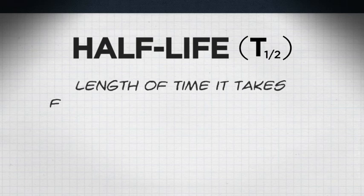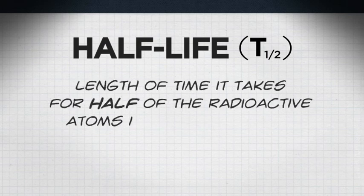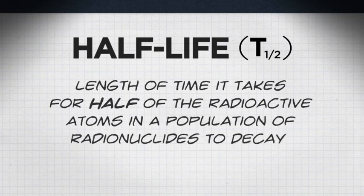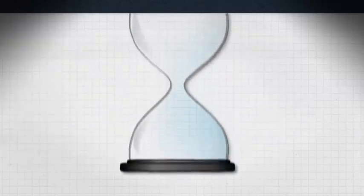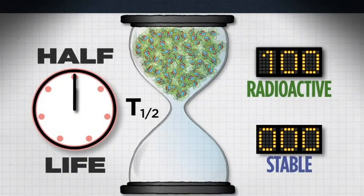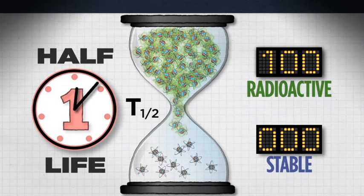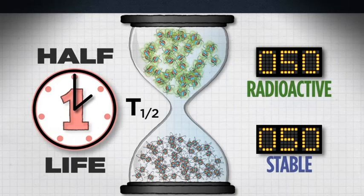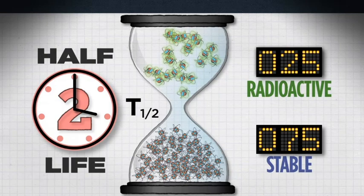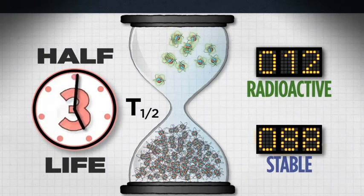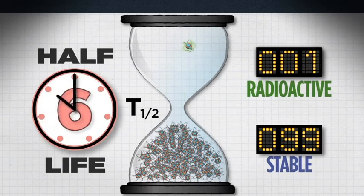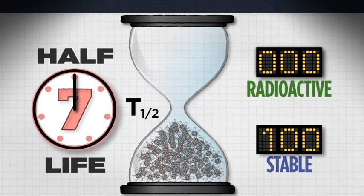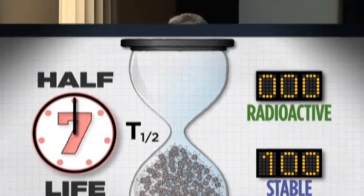Half-life is the length of time it takes for half of the radioactive atoms in a population of radionuclides to decay. I'll show you in an example. Imagine we have 100 radioactive atoms sitting here. After one half-life, half of them would decay to a more stable state and we will have 50 left. After another half-life, we would have 25. And after another half-life, we would have 12, and then 6, and then 3, and then 1. Eventually, all of the radioactive atoms that we started with have decayed to a more stable state.